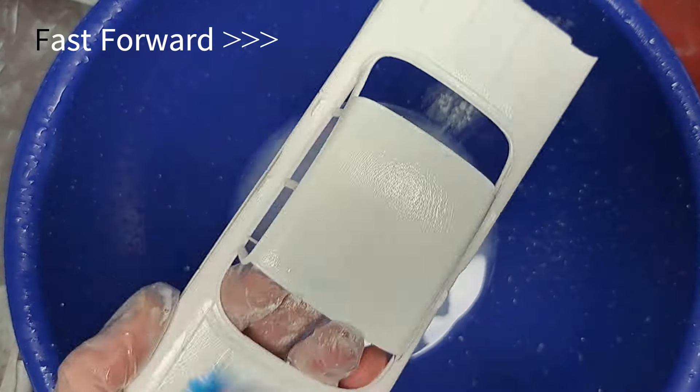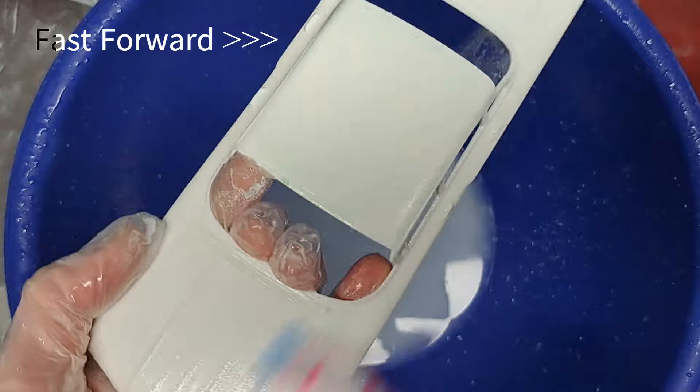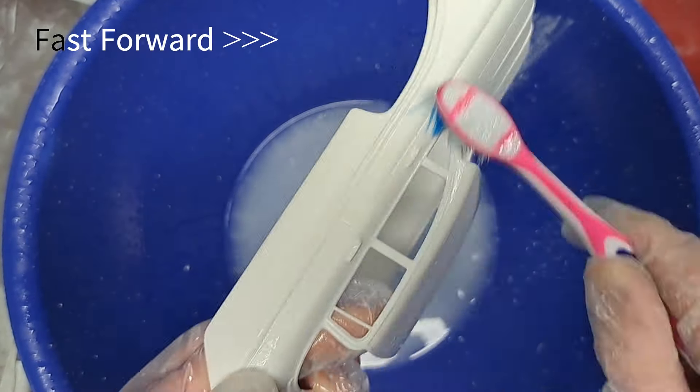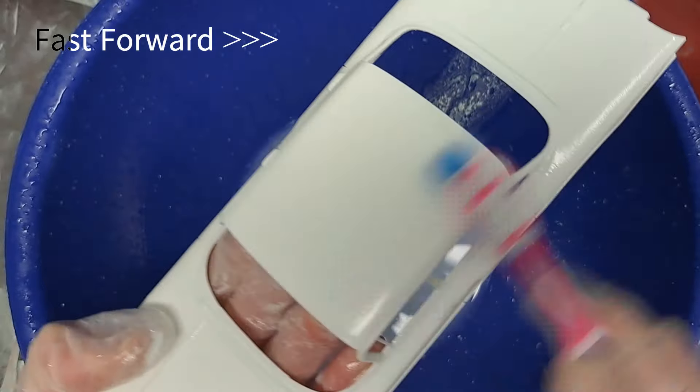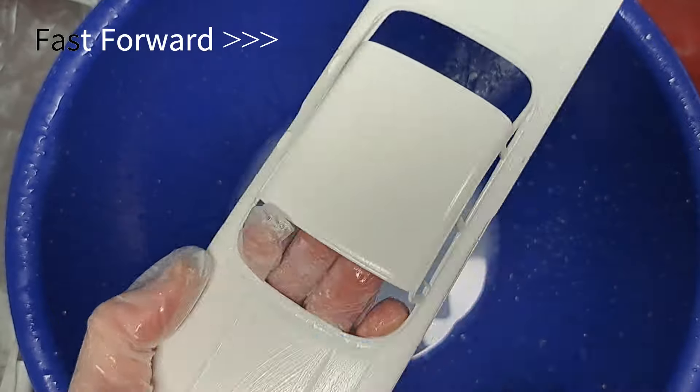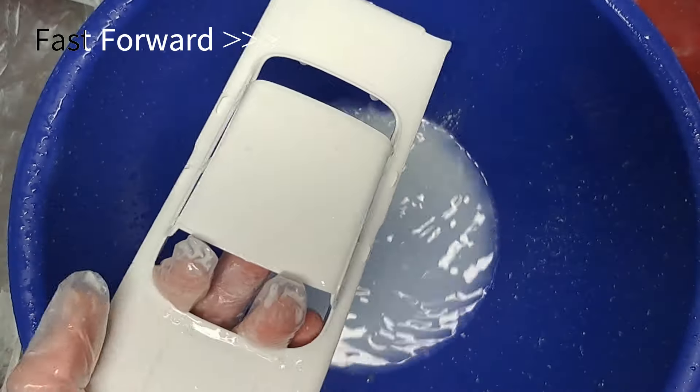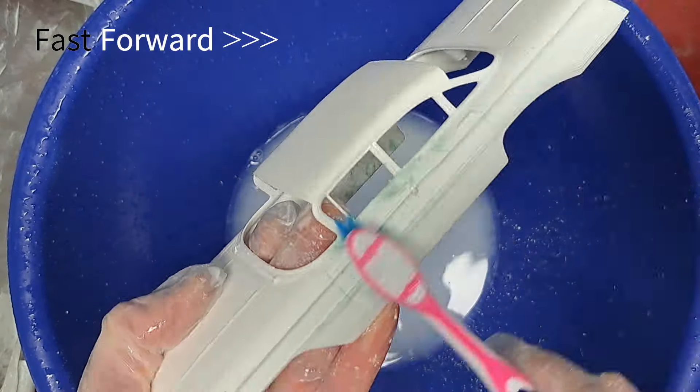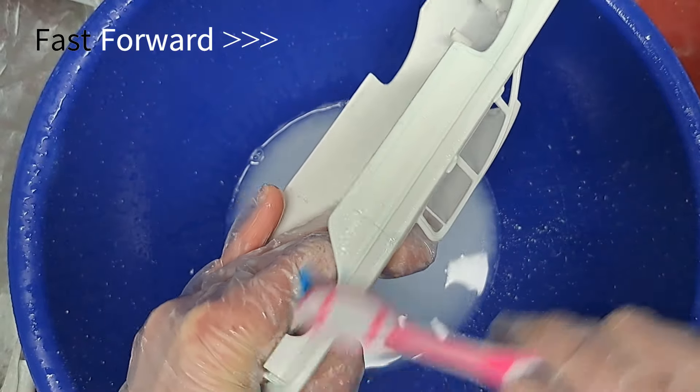I was using the big brush before and now I'm going back to the toothbrush to get into all the fine little areas and I'm going to go over the whole body again with the toothbrush, this time scrubbing resin.